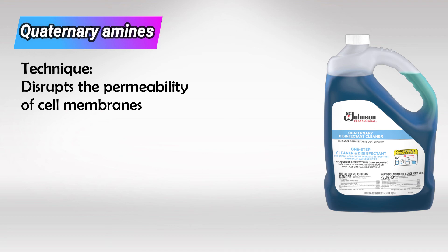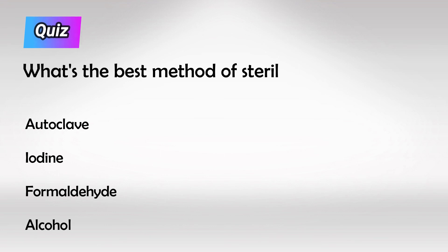Finally, we have quaternary amines. These work similarly to amphotericin B by increasing the permeability of the cell membrane. These are not sporicidal.